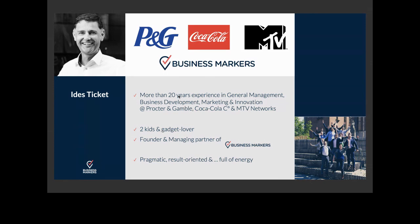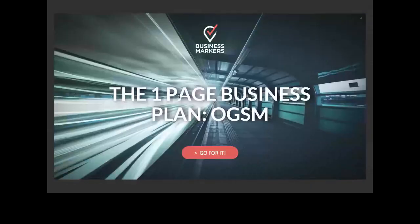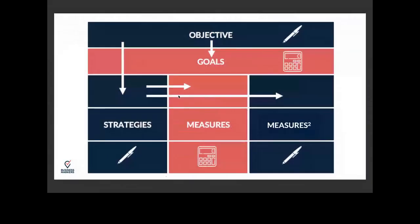Good afternoon, everybody. Welcome to the webinar about the one-page business plan. How does it work? Let me give you some explanation. First of all, the one-page business plan — we put it on one page and we use the acronym OGSM. It's the O of Objective, the G of Goal, the S of Strategies, the M of Measures. And Measures we have twice in this one-pager.